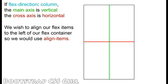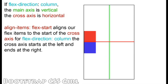Our FlexDirection is set to Column, and we would like to align our FlexItems to the left of our container, so we will use the AlignItems property. To align our FlexItems to the left, we set AlignItems to FlexStart. This moves our FlexItems to the start of our cross-axis. With FlexDirection set to Column, the cross-axis starts at the left and ends at the right.